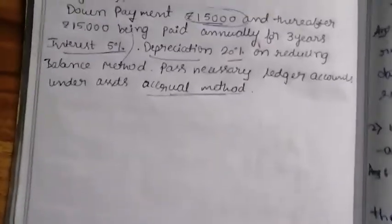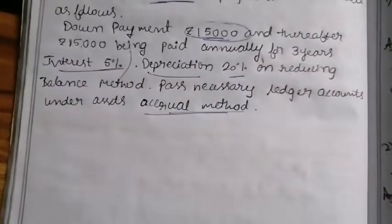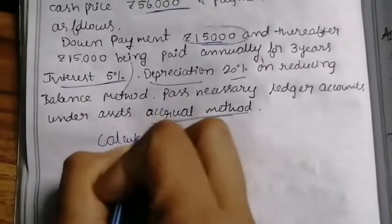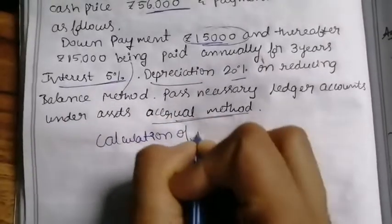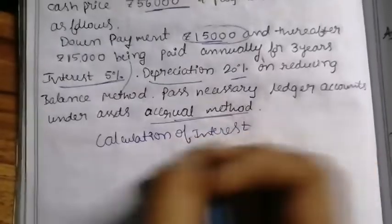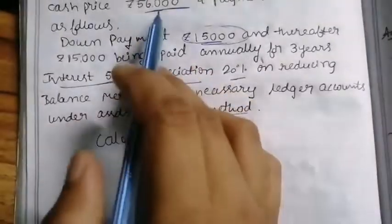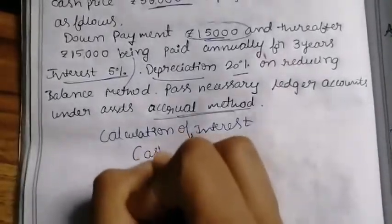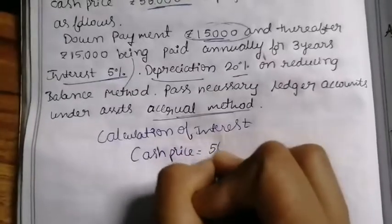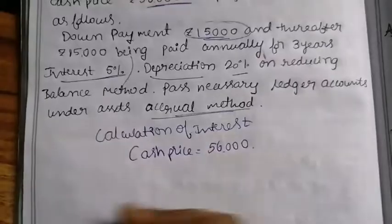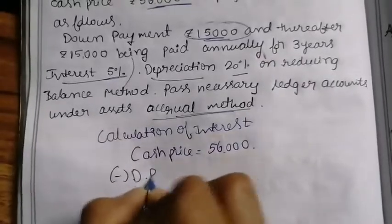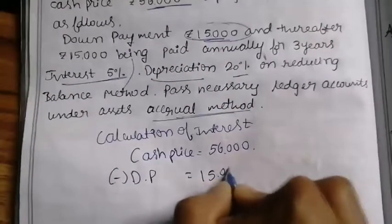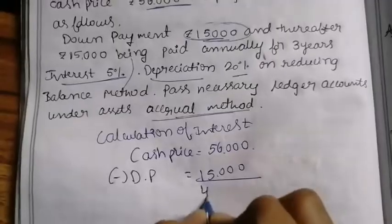First, we calculate the interest. Cash price is ₹56,000. Down payment is ₹15,000. We subtract the down payment to get ₹41,000, which is the outstanding cash price.